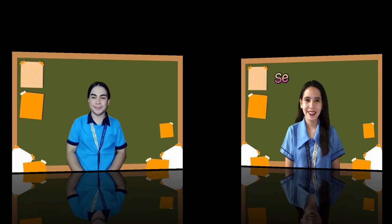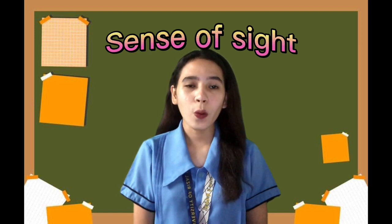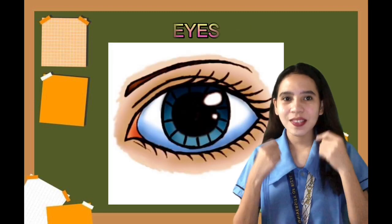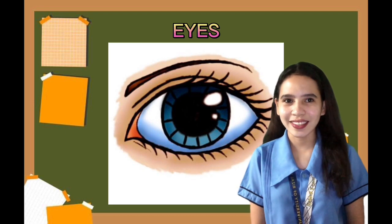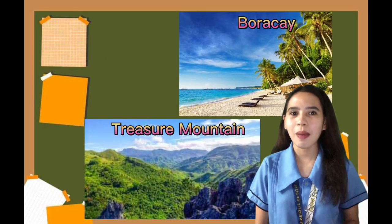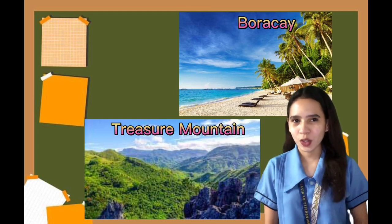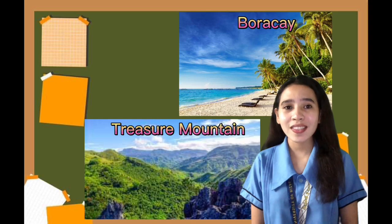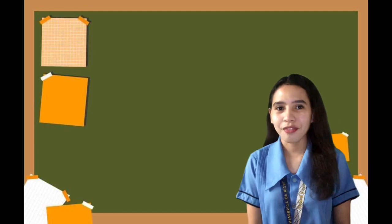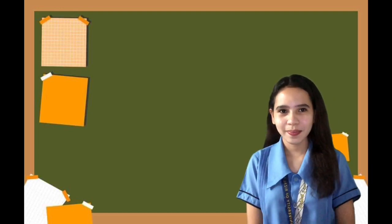To help us understand the sense of sight, let's have Teacher Danica. Our first sense is the sense of sight. The eyes are used for seeing. For example, we can see leaves, flowers, people, and many things using our eyes. After observing a picture, what sense organ did you use to say that it is beautiful? We use our eyes. Eyes are important because they help us see and observe things in our surroundings.